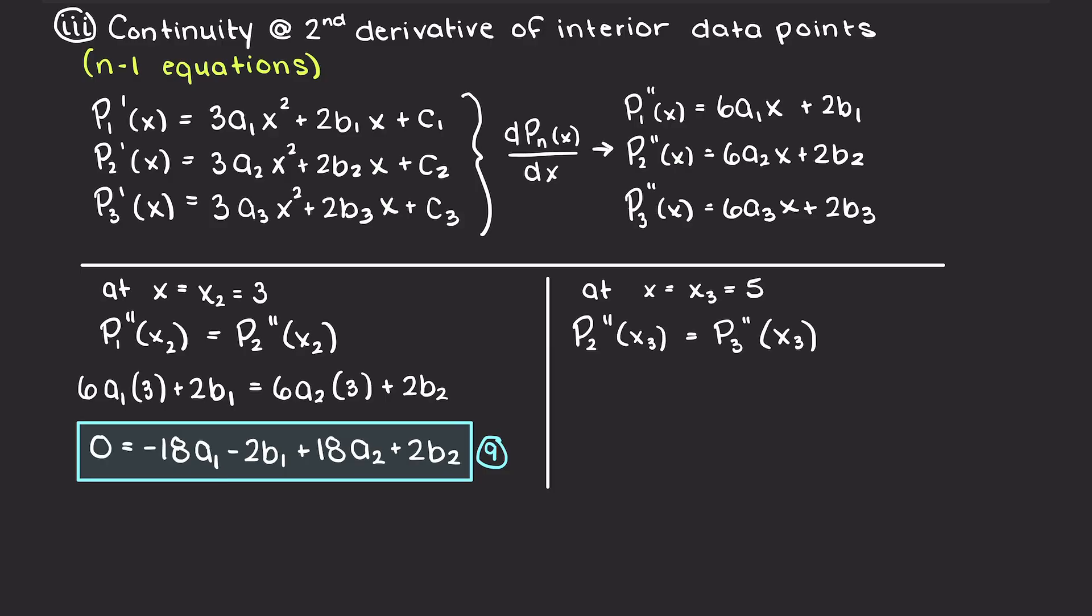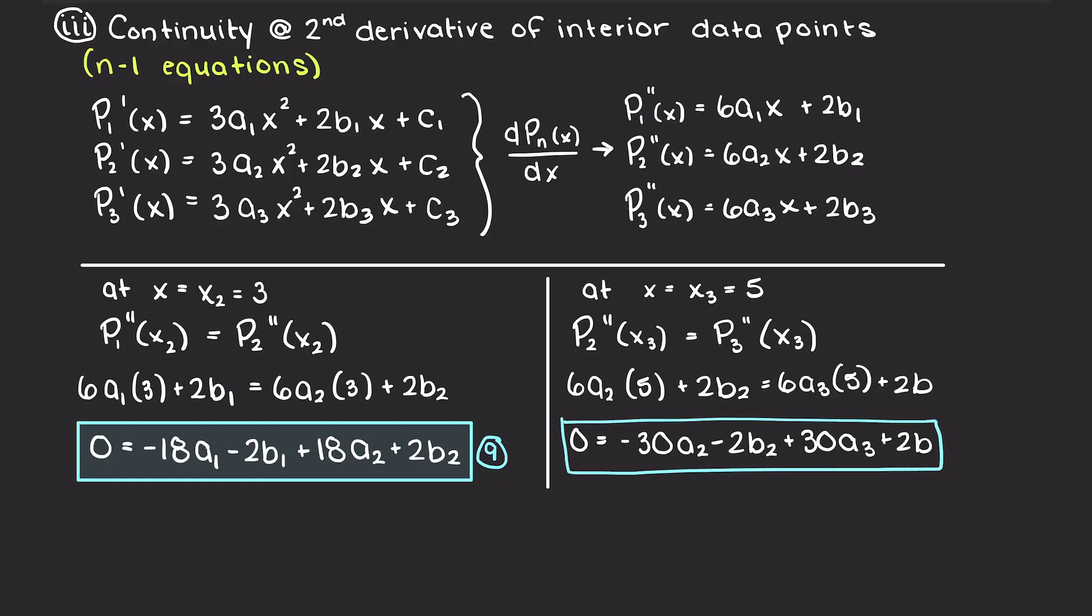Secondly, we can repeat this process with our second interior data point, between P2 and P3. Therefore, we will again take the derivative of our first derivative P2 and P3 functions we found earlier, and evaluate them at x equals x3, which is 5. And again, we will rearrange this equation to put all variables on one side, and just leave our constant, which is 0, on the other side of the equation.